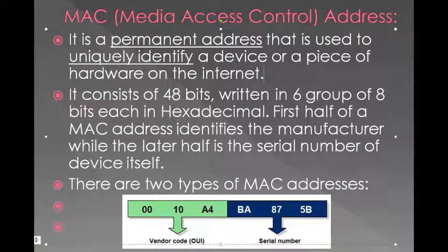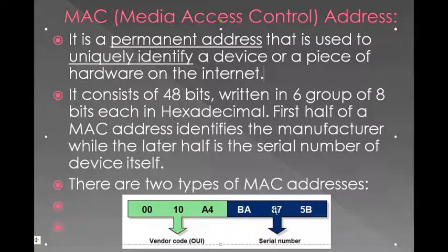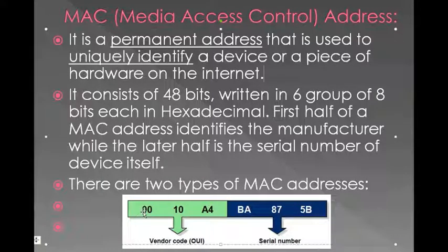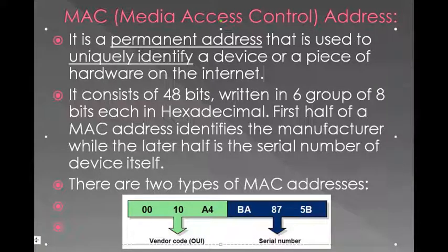A MAC address consists of 48 bits, written in six groups of eight bits each in hexadecimal — for example, 12:34:56:... It is always written as six groups of two hexadecimal digits each, giving twelve hexadecimal characters total. Since one hexadecimal character is represented by 4 bits, twelve characters equals 48 bits.